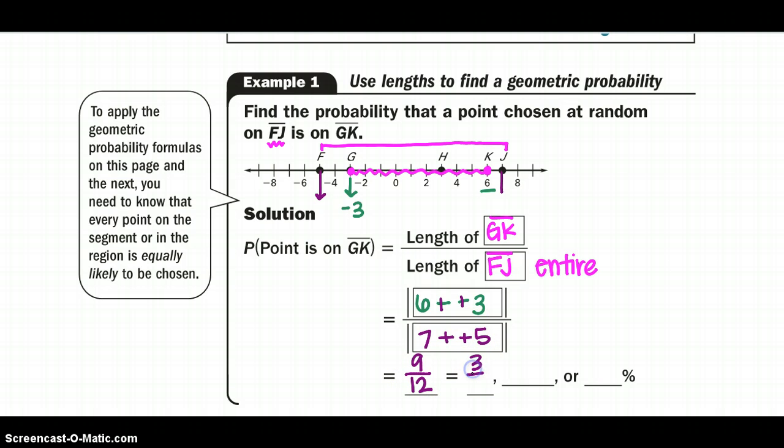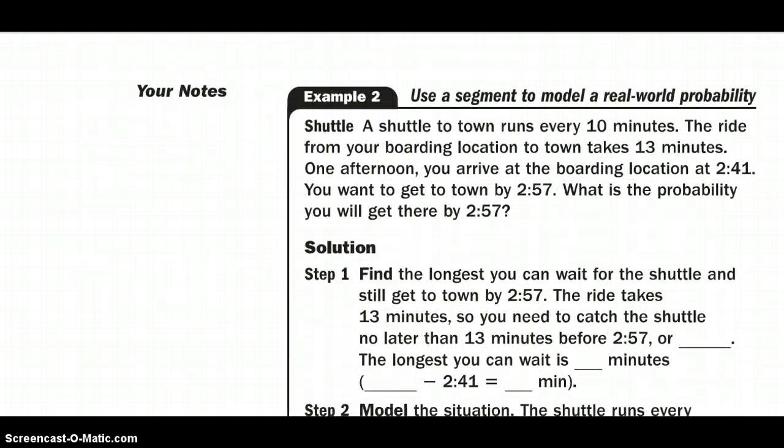I'm going to reduce that down to 3 fourths, which is .75 as a decimal. And we know to make that a percentage, we can move that decimal place over to the right two spots and we would get 75%.